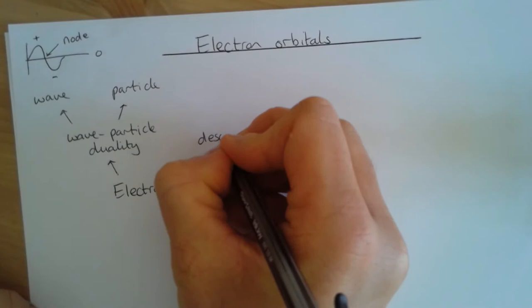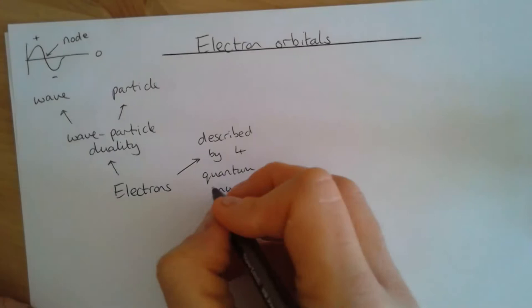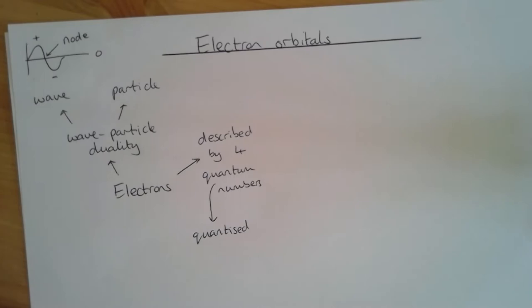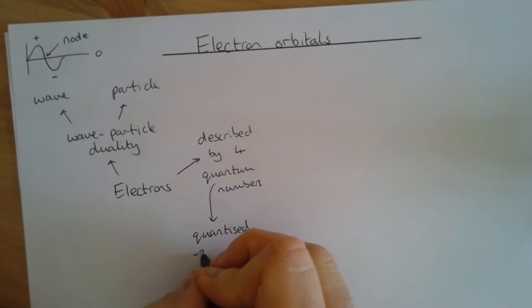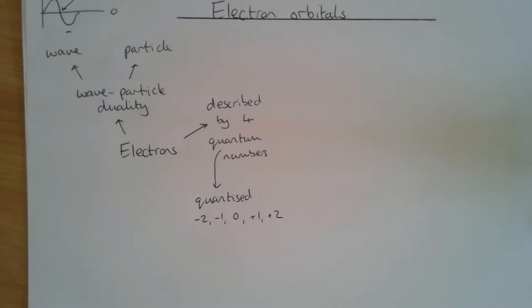Electrons can be described by four quantum numbers. The word 'quantum' itself — if numbers are quantized, that means they have values of positive or negative integers or zero. So quantized means values like −2, −1, 0, +1, +2. All numbers used to describe electrons are quantized, with one exception where we can have a half integer, which we'll see later.